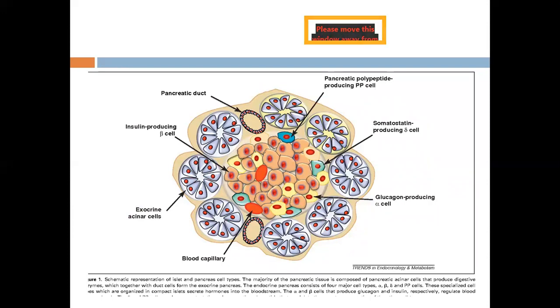This covers the exocrine part of the pancreas. Now we come to the endocrine part. Endocrine pancreas is composed of spherical aggregations of cells. These spherical aggregations of cells are known as islets of Langerhans.